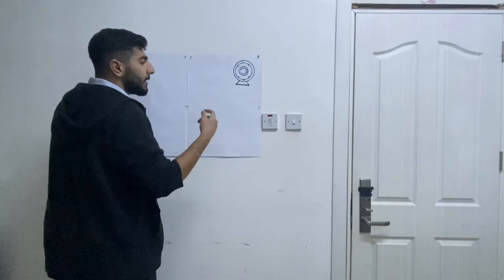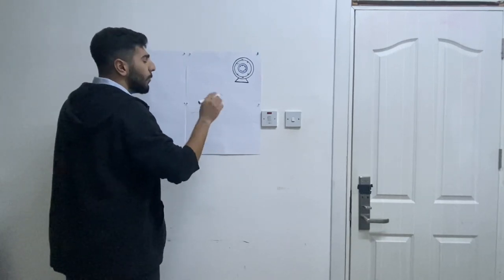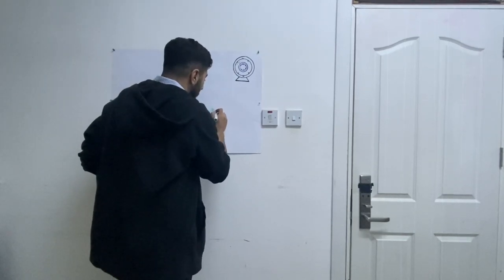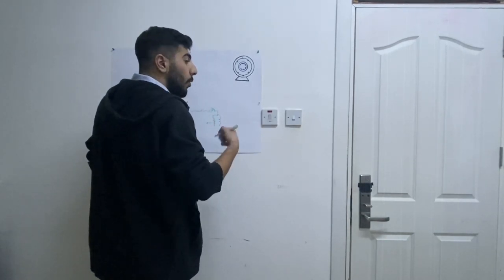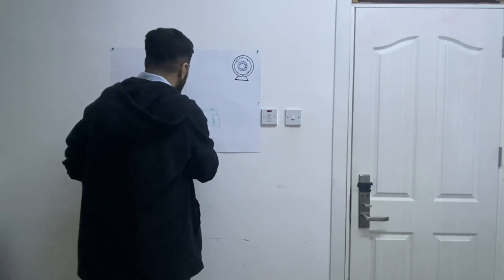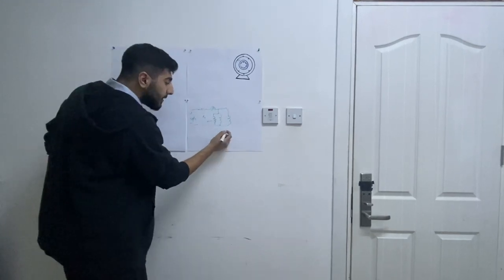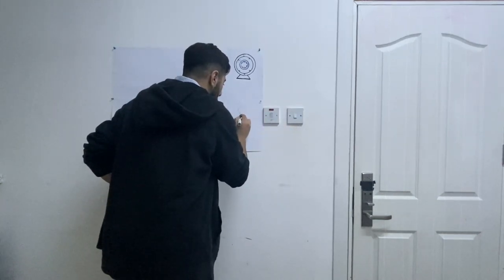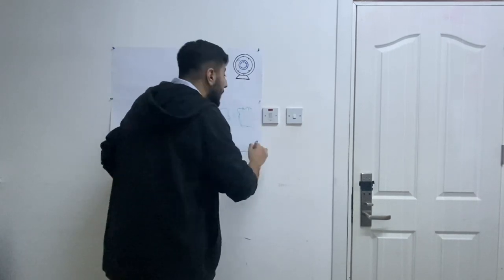Let's take the equivalent circuit of this induction motor. It starts off just like a transformer. In one phase, there is a resistance of the stator, then the reactance, then two parallel elements: one represents the core losses (Rc) and the second represents the magnetization. This is the phase voltage (V_phase). That covers the stator part. Then we move to the rotor part, which also has a resistance and a reactance.